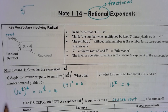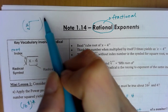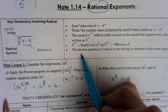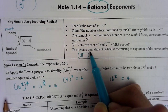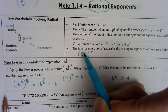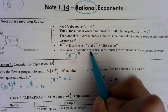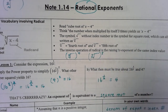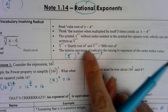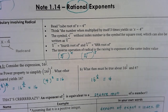Earlier in the year I taught you that to undo a square root, you have to square. So to undo a fourth root, you raise to the fourth power. These are inverse operations of each other. To undo a fifth root, you raise to the fifth power, and so on. The inverse operation of a radical is always raising it to the exponent of the same index value.